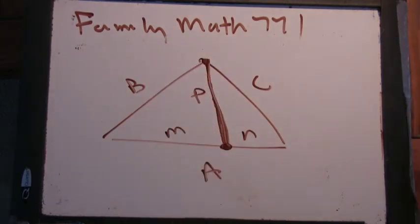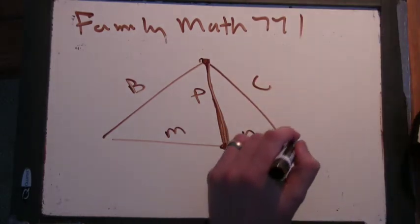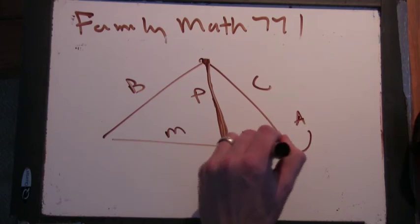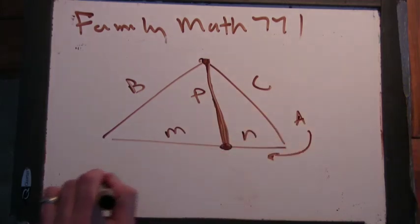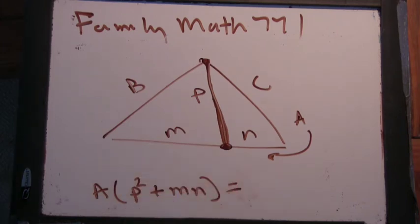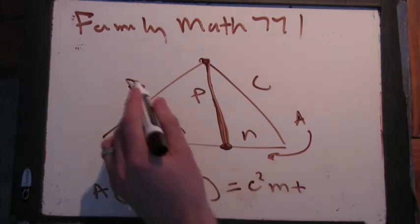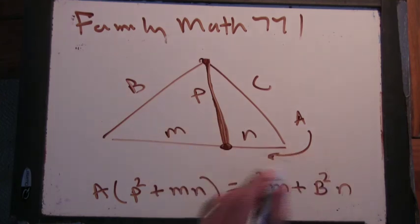And then there's this amazing formula. I'm just going to move my A, just going to write the formula down here. It says A times the quantity P squared plus MN equals C squared M plus B squared M.